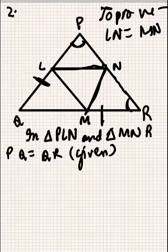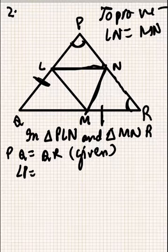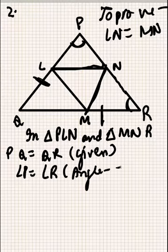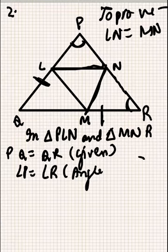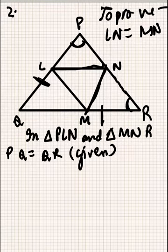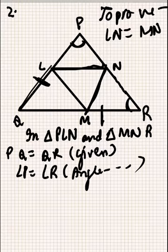It means angle P will be equal to angle R because angles opposite to equal sides are equal. See how it comes - the side is PQ, so which angle is opposite to side PQ? This is angle R.